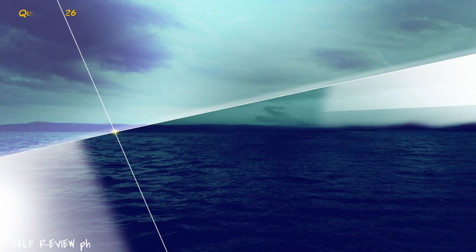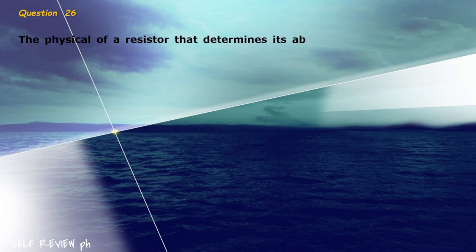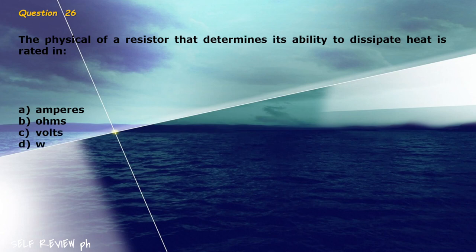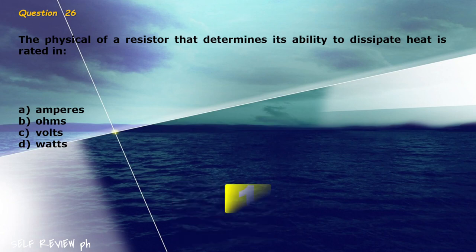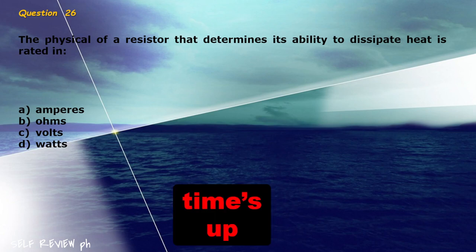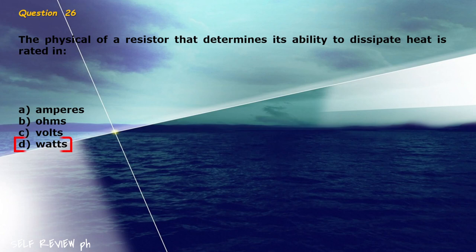Question 26: The physical property of a resistor that determines its ability to dissipate heat is rated in blank. A) amperes, B) ohms, C) volts, D) watts. The correct answer is letter D, watts.